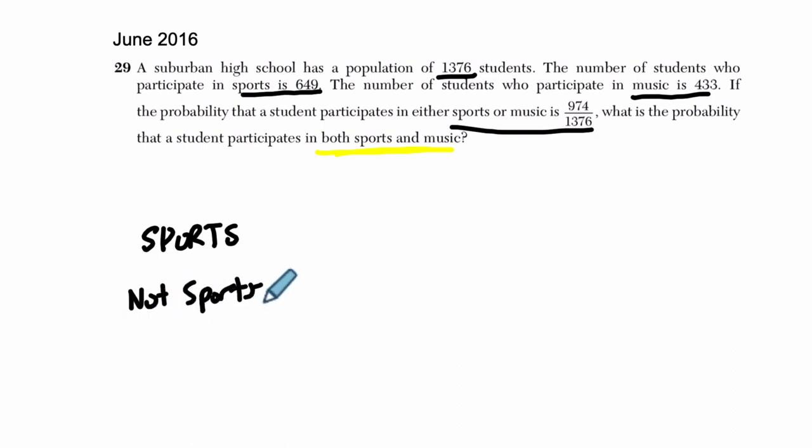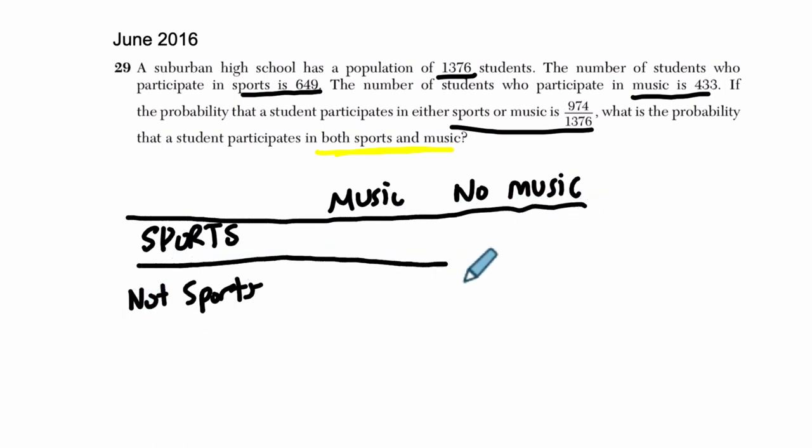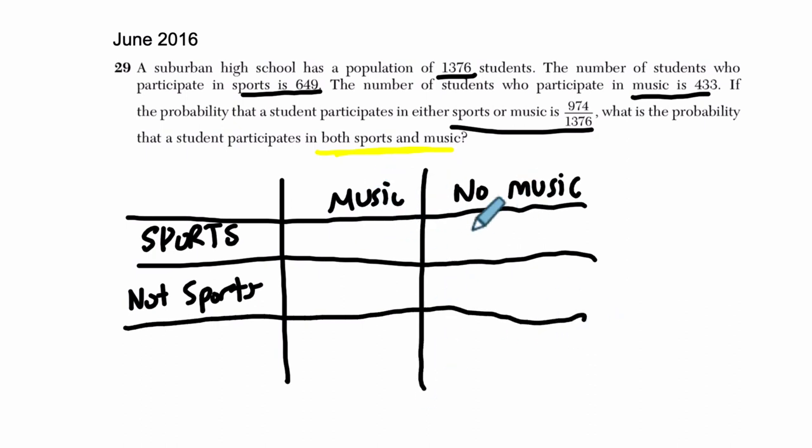And then with music, you either play music or you don't. No music. So the way the two-way table works is that you set this up. We've got this row right here. This row represents all the students who play sports. Below it is the row of students who don't play sports. And then we have two columns, music and no music.